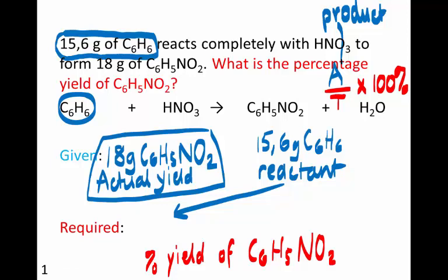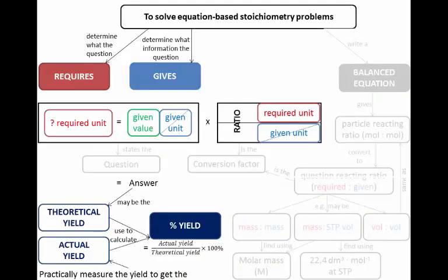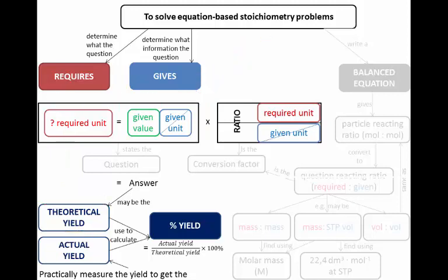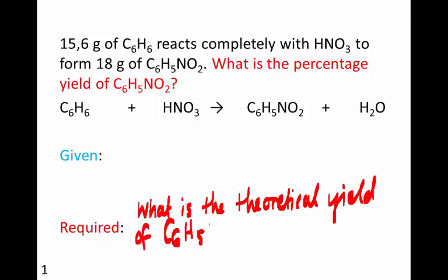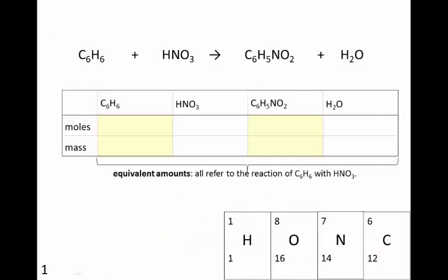You are also required to find the theoretical yield of nitrobenzene, so that you can find the percentage yield. You'll use the mass of the benzene reactant to get the theoretical yield. We need to write our own sub-question: what is the theoretical yield of C6H5NO2 from 15.6 grams of C6H6? To answer this, we need the balanced equation.